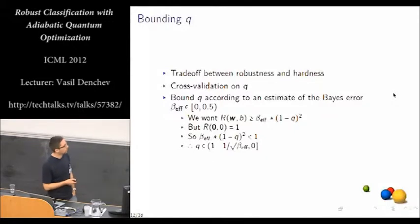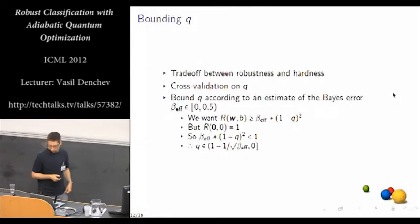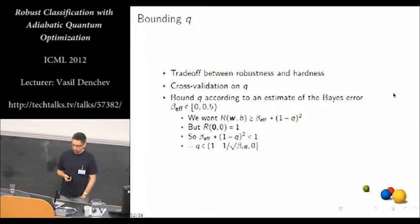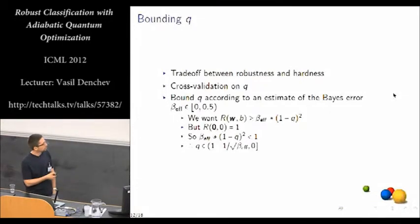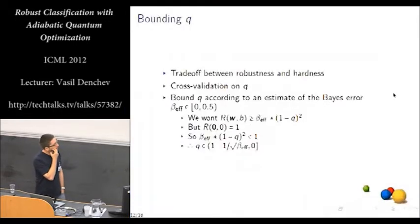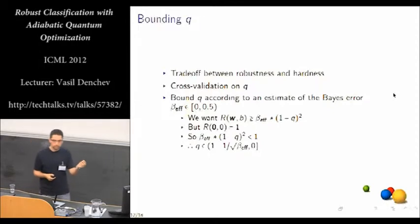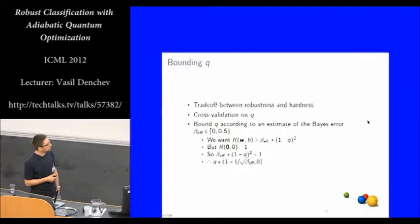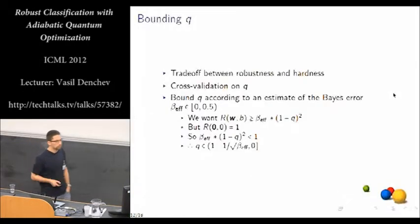So for that purpose, we computed a bound on q in order to get a tight interval to choose cross-validation values from. So we have a simple argument for this. Basically, for the empirical risk for any given data set, we want it to be at least this quantity, which would be the objective value when all of the mislabeled data points are at the constant segment of the loss on the negative side. So that means that all of them are being indicated as mislabeled by the loss. But the empirical risk of the trivial solution of all zeros is 1. So then we get this inequality here.